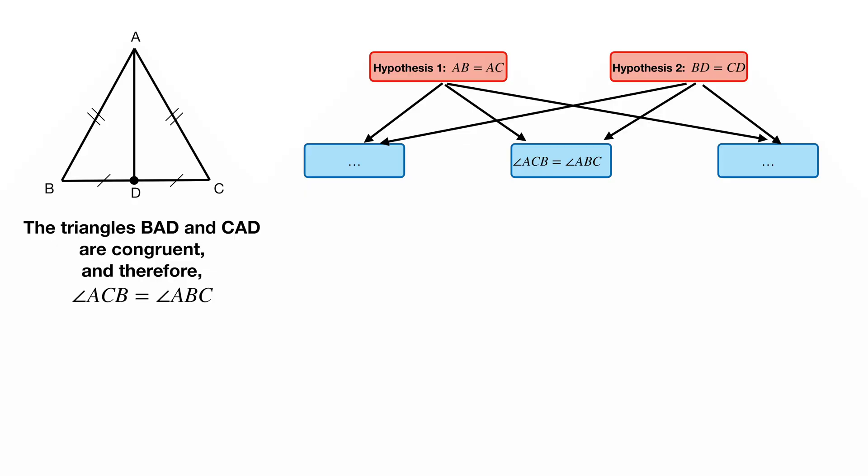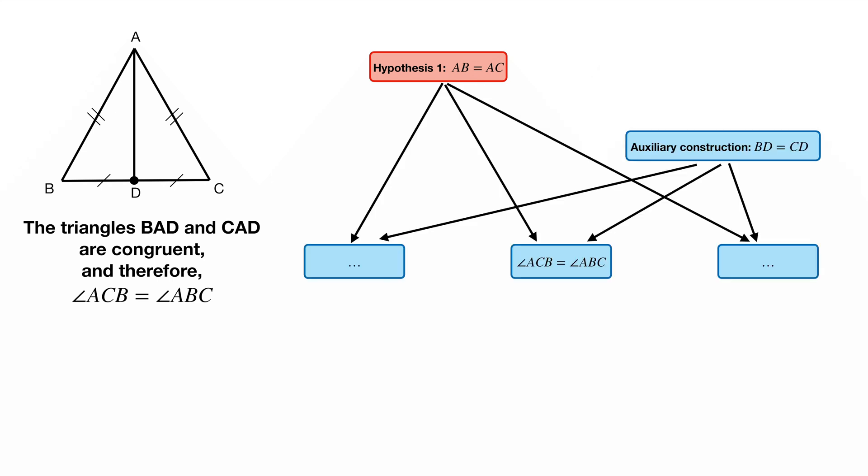Alright, but that still doesn't say how the model learns how to make auxiliary constructions. And here is the trick. Let's look back at our previous example. In the set of hypotheses, the midpoint D does not appear in the conclusion statement. So we can move it from the hypothesis to the proof body and voila! The large language model has an example on how to make a proof with an auxiliary construction.